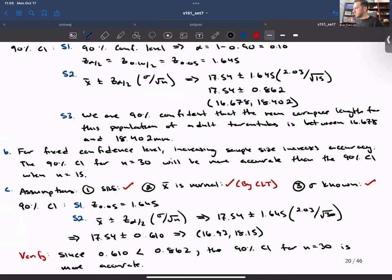And that goes back to what I mentioned in a previous video. When you're verifying accuracy of confidence intervals, you can compare the lengths. So the shorter interval is considered more accurate, or you can compare the margins of error directly. So the interval with the smaller margin of error would be considered more accurate.